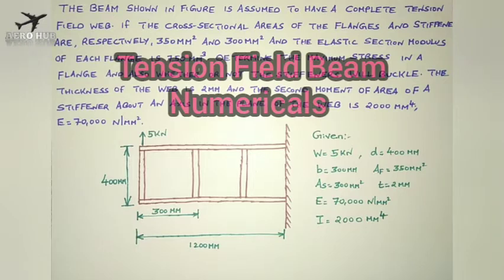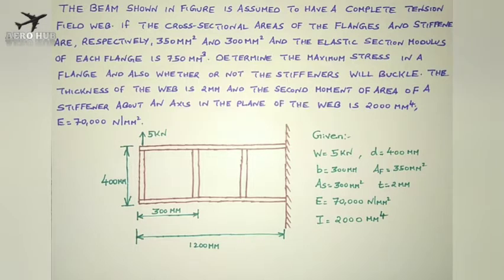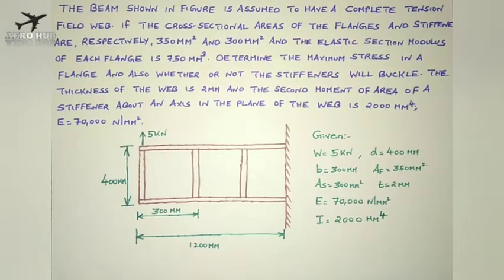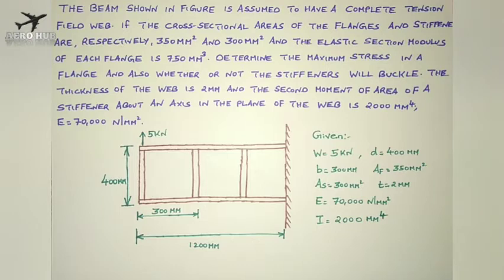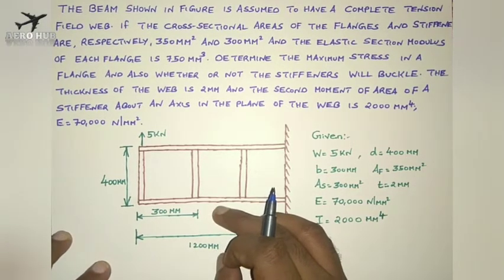Hello everyone, welcome back to AeroHub and welcome to this series of lectures in aerospace structures. In the last lecture we discussed about the estimation of stress and large load acting on a complete tension field beam, what a tension field beam is, and its application in aerospace — especially in the design of spars. In this lecture we will see a numerical problem, also called a Wagner beam, as you can see in the figure.